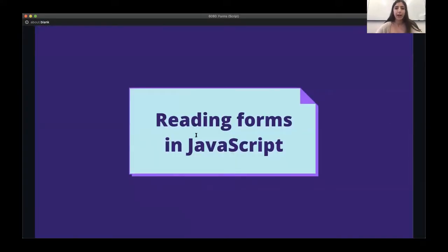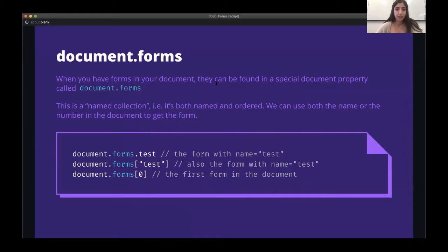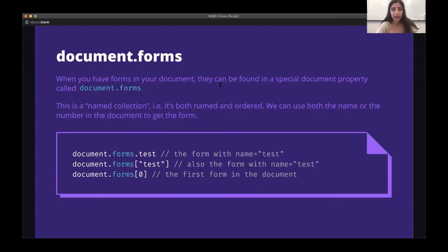We've taken a look at how to write the HTML for a form. Now we want to be able to read those forms in JavaScript. On your webpage you might have one form or multiple forms, and we want a way of accessing them. The document object in JavaScript has a property called forms where you can find all of the forms in your document. document.forms is a named collection, which means we can index it like an array and we can find a form using the name of the form. So we can do document.forms.test to access the form with the name test.